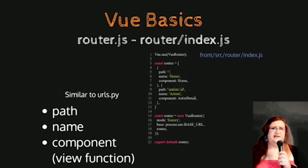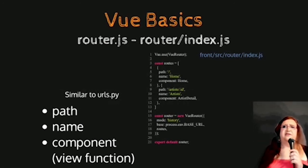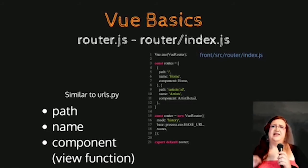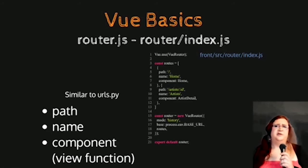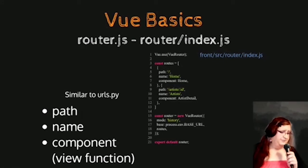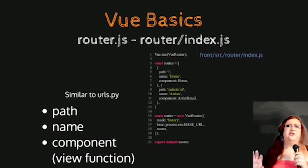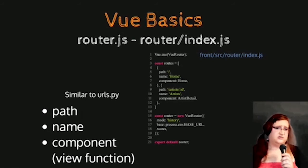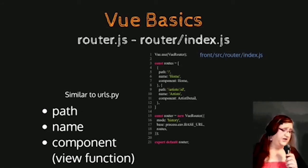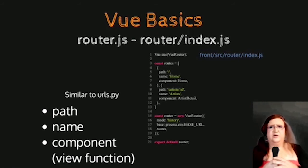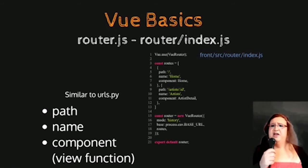Let's look a little bit deeper into those files. Router.js or router/index.js — as far as JavaScript is concerned, it's a bit like having module.py or a module directory with a dunder init dunder.py. If you look at this file, the URLs are defined pretty similarly to Django. There is a path to match the URL, an optional name, and a component — which in Django would be associated to the view function that renders the content of the page.